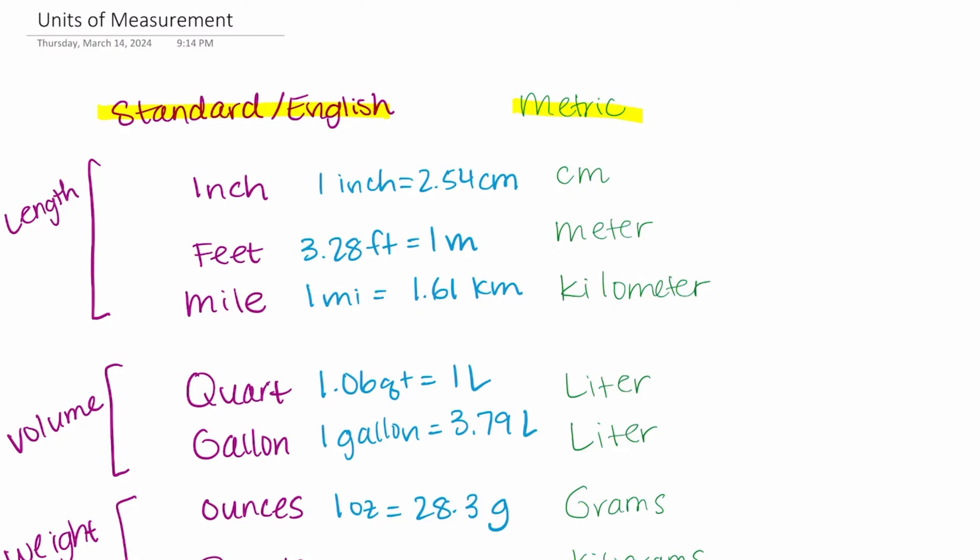Here I have a list of some of the important measurements that you need to know as well as the conversions. You'll see I have the standard or English measurement units in kind of this purplish color and then I have the metric units in green so you can see the difference there, and then I have the important conversions between them in blue.